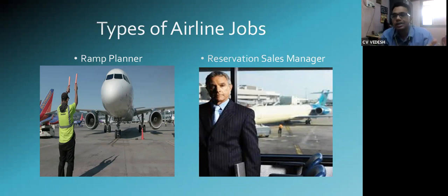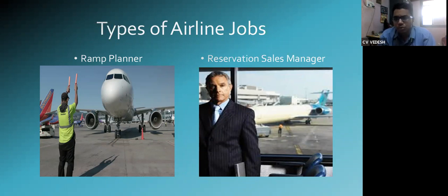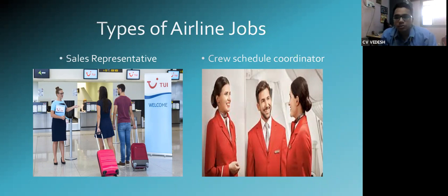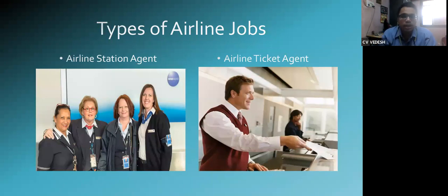The ramp planner makes sure the airport runway is aligned and that each airplane has a perfect timing for flying. The reservation agent makes sure your booking — say from Mumbai to Delhi or Mumbai to Bangalore — is done properly and you have no problems flying. Sales representatives are marketing people who promote the airline. The cabin crew controller guides people on what they need to do on the airplane.